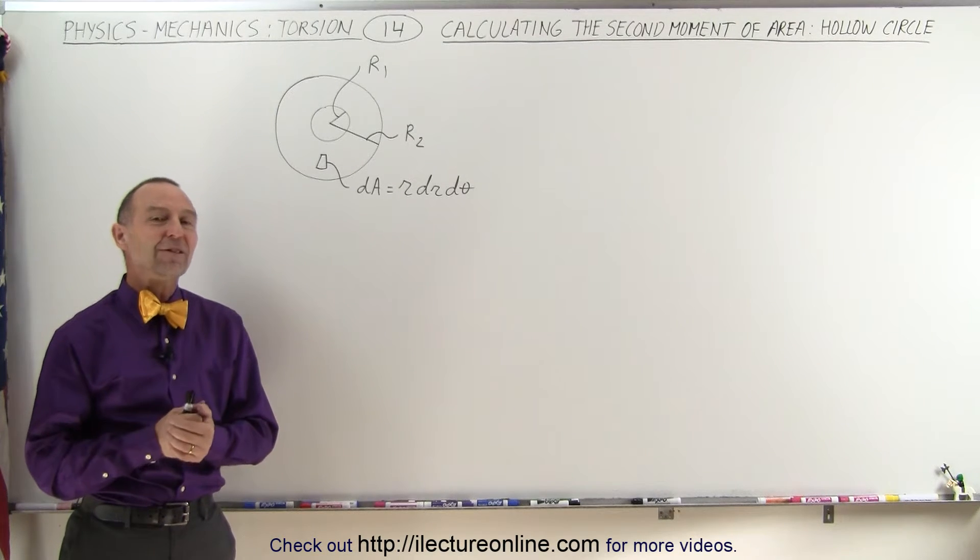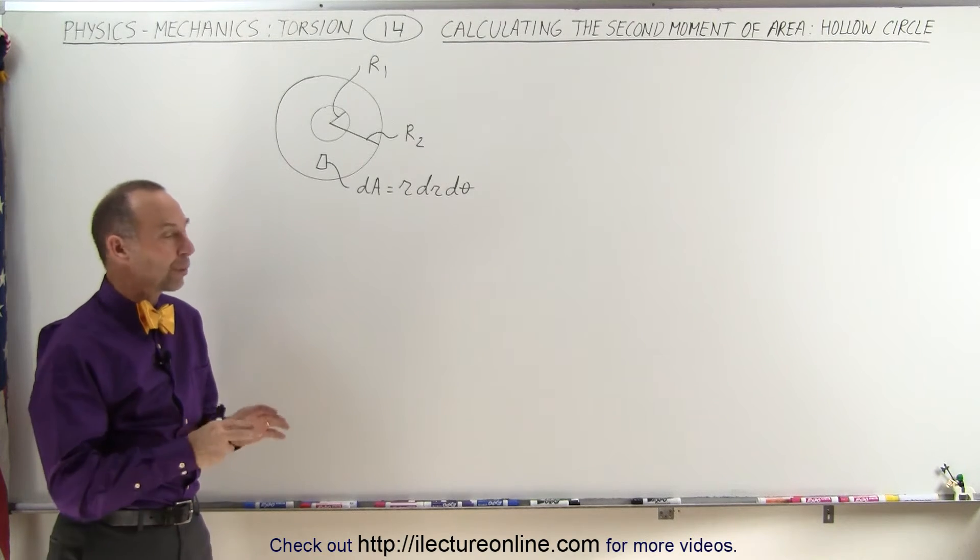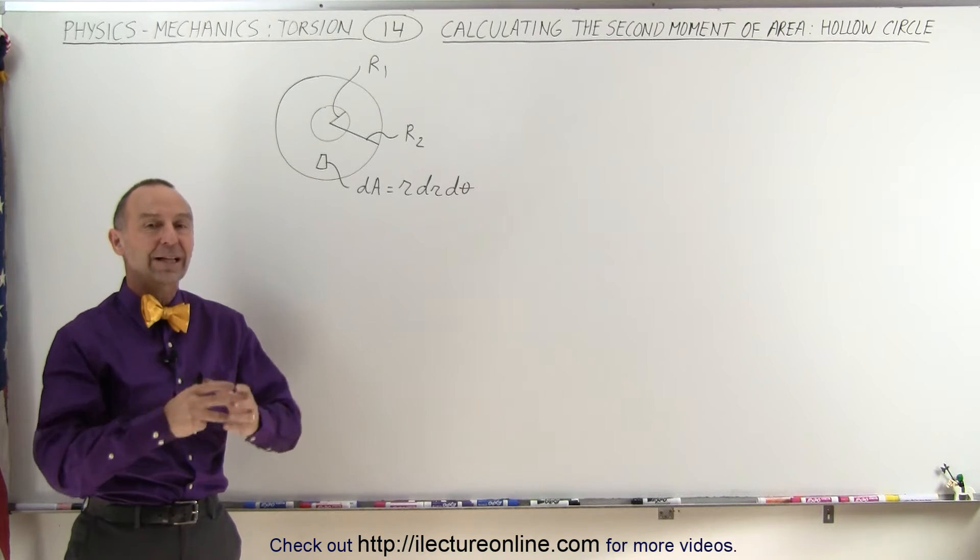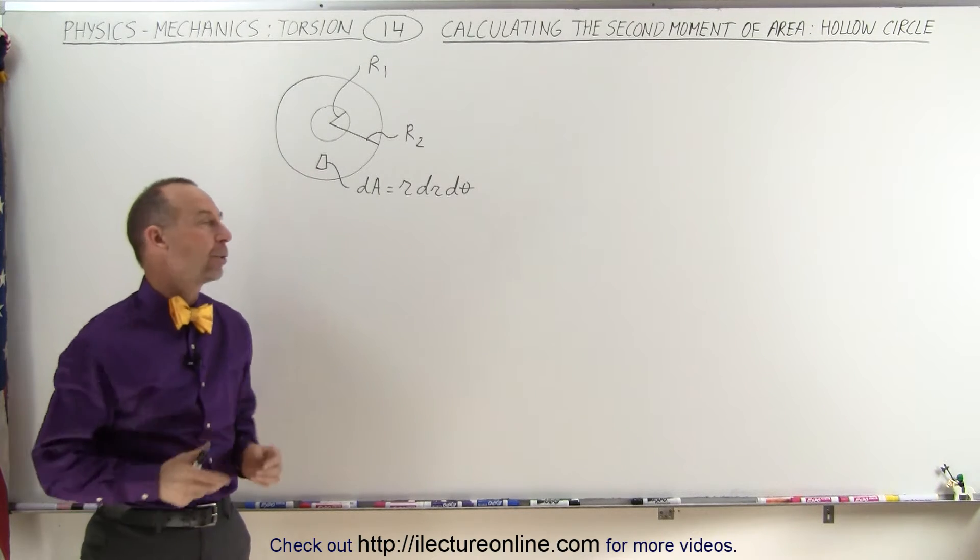Welcome to our lecture online. Now let's find the torsional constant for a circular cross-section that has a hole in it that is hollow in the middle.